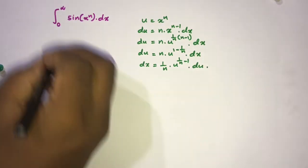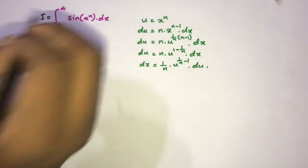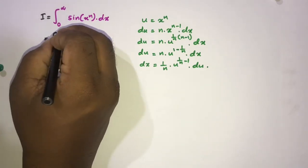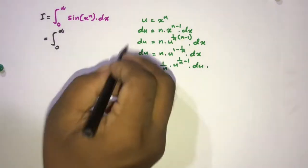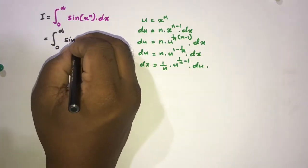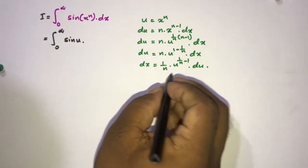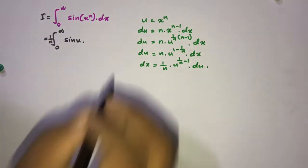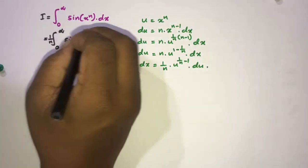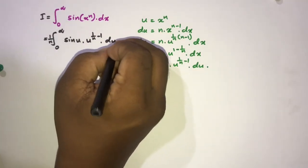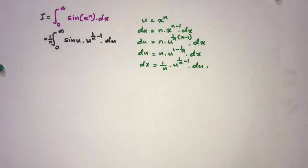Now we substitute back. Our integral I is equal to the integral from zero to infinity of sin(u) dx. Substituting dx, we get 1 over n — a constant we can write outside the integral sign — times u to the (1 over n minus 1) du.